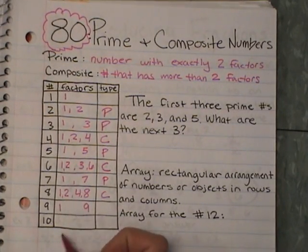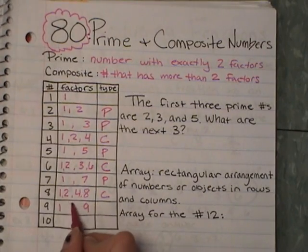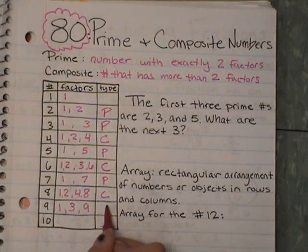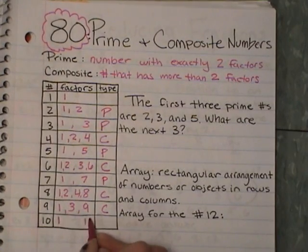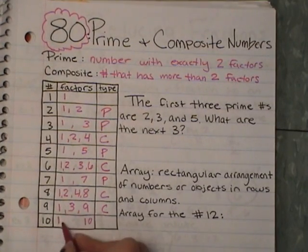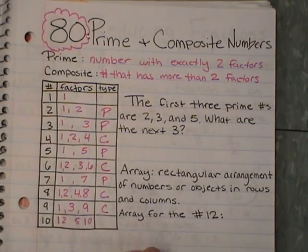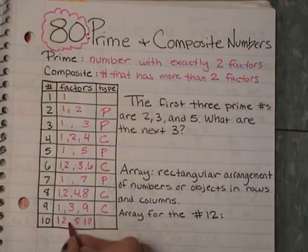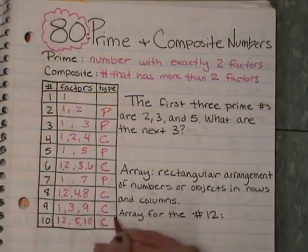Does 2 fit into 9? No. Does 3 fit in? Yes. 3 times 3. And that would be composite. 10: 1 times what? 10. Does 2 fit in? Yes. 2 times what? 5. Does 3 fit in? No. Does 4 fit in? No. So 1, 2, 5, 10 — which makes it composite.